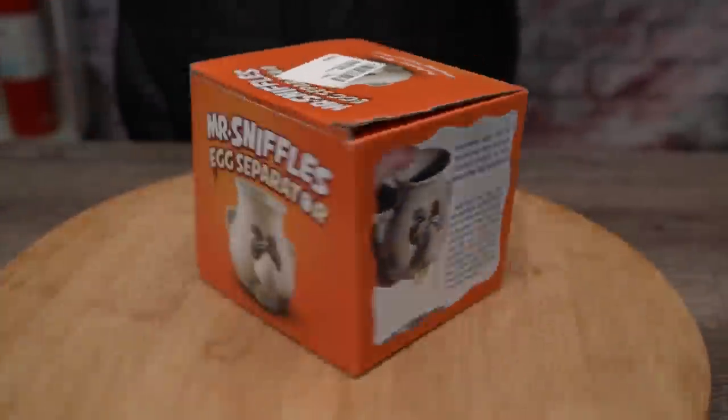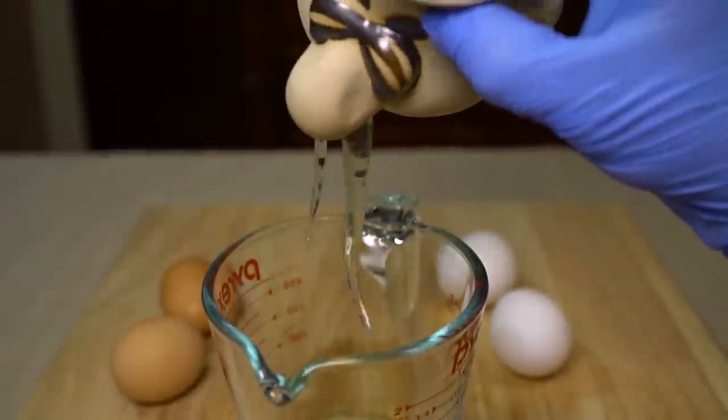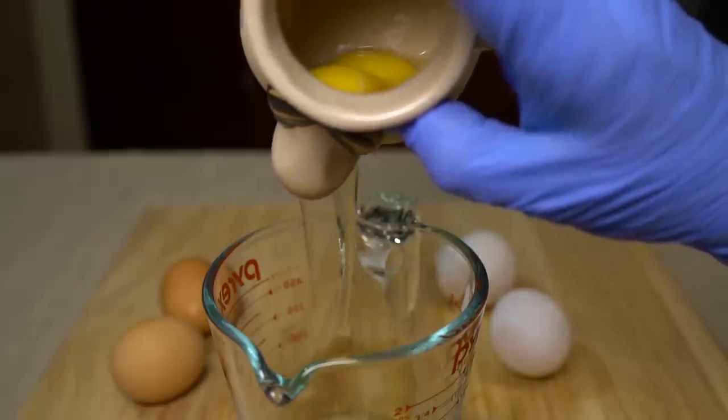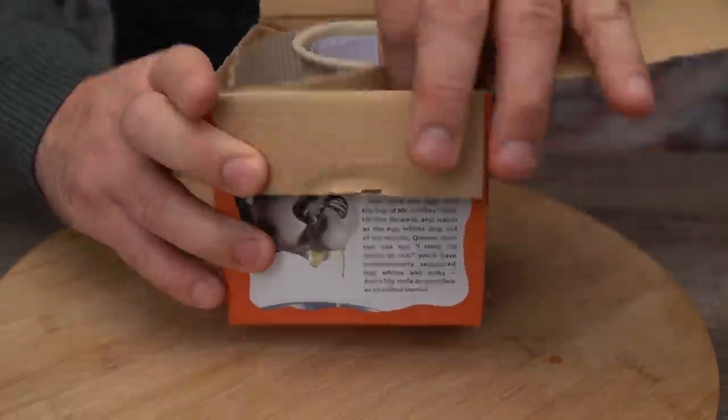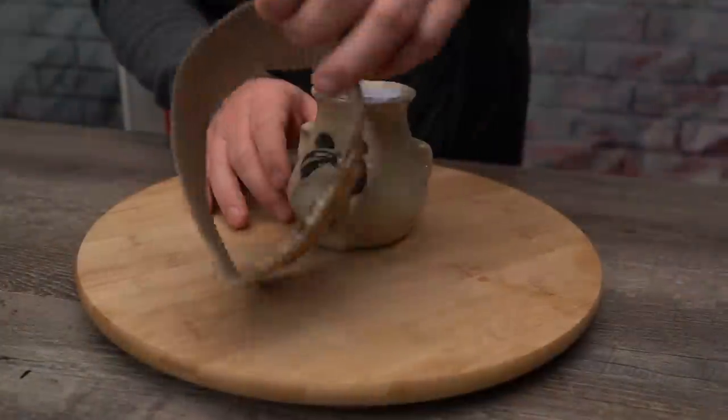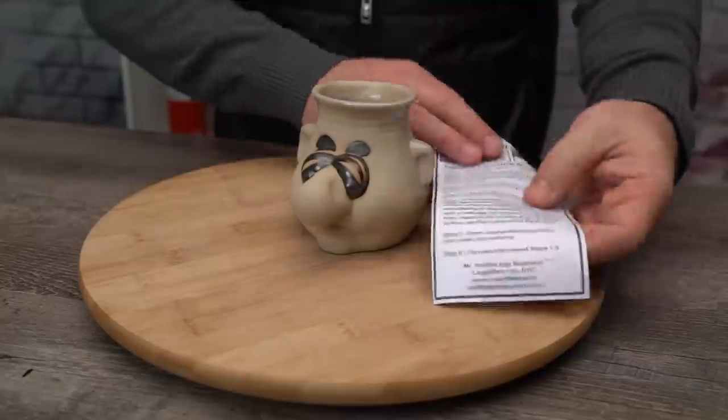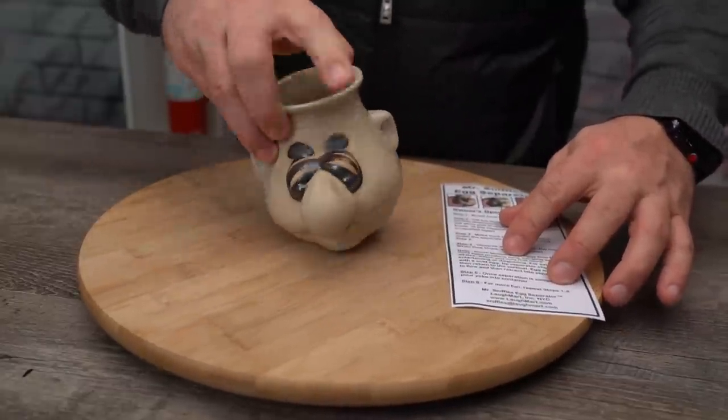Oh, look there, it's Mr. Sniffles! He's a hilariously disgusting tool that's used to separate egg whites directly from their yolks. Once you remove the contents from the box, you'll have a ceramic separator, as well as instructions on how to perfectly egg-stract your drippy delights.